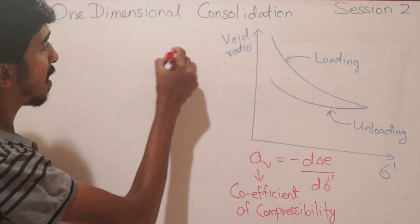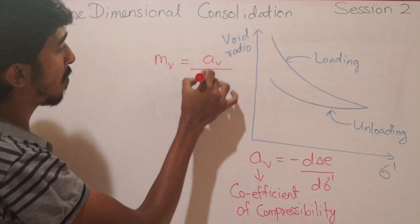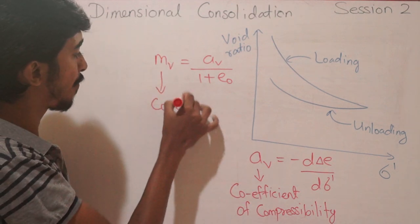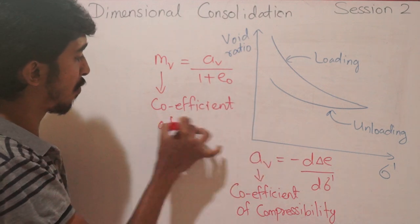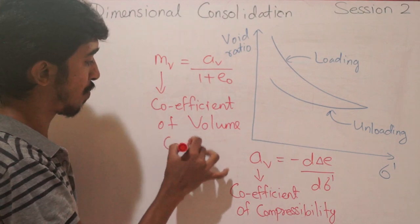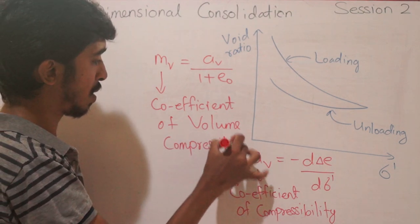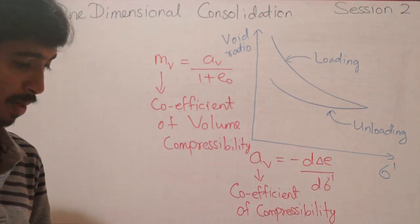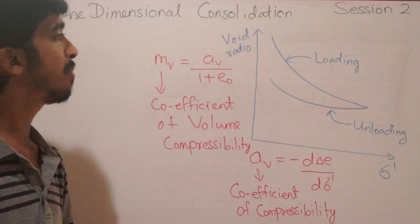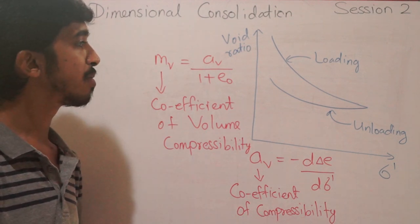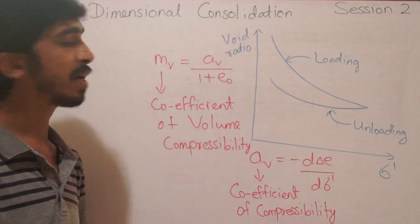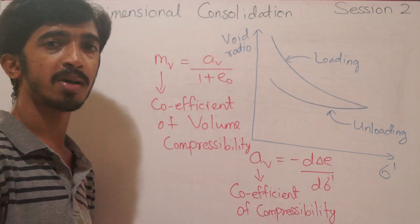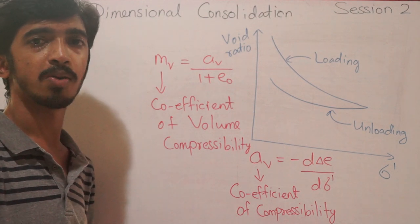Other than a_v, we can also find m_v, which equals a_v divided by (1 + e₀), where e₀ is the initial void ratio — m_v is the coefficient of volume compressibility. On the log scale semi-log plot, we can distinctly separate the rebound curves, the virgin compression curve, and the recompression curve, which is not easy to do on the linear scale.